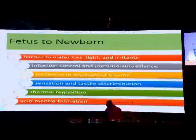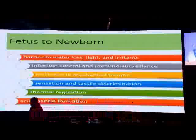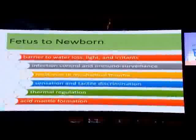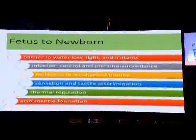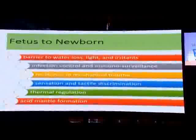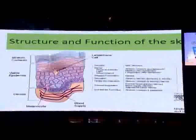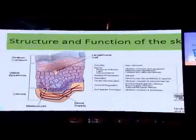The skin has to take over the function of infection control and immune surveillance — that is how atopic dermatitis, allergic reactions, and irritant dermatitis originate. It needs to be resilient towards mechanical trauma, which we understand more clearly in preterm skin, which is highly predisposed to injury. It needs to develop sensation and tactile stimulation, thermoregulate through sweat glands and neuroendocrine processes, and generate an acid mantle that protects skin structures.